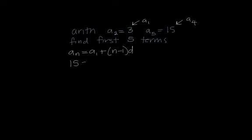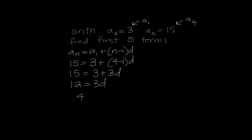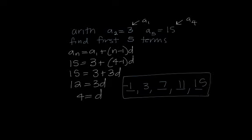So I'm going to say 15 equals 3 plus 4 minus 1 times d. So 15 equals 3 plus 3d. So 12 is 3d. So 4 ends up being my common difference. So what I can do with that now, if I know that 3 is the second term, I can just add 4 to get to those next terms. And going backwards, I could subtract 4. And this would be our answer.